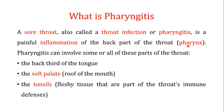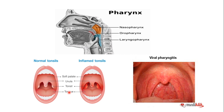Pharyngitis is the painful inflammation of the pharynx. During pharyngitis, some or all of the following parts of the throat can be involved: the back third of the tongue, the soft palate — which is the roof of the mouth — and the tonsils, which are the fleshy tissue that are part of the throat's immune defenses.